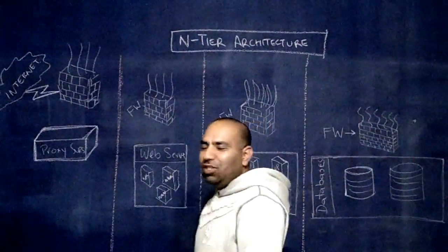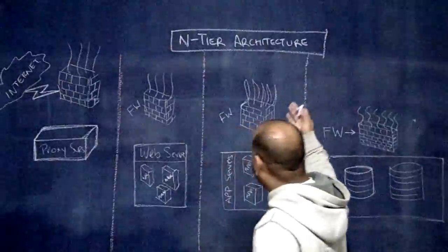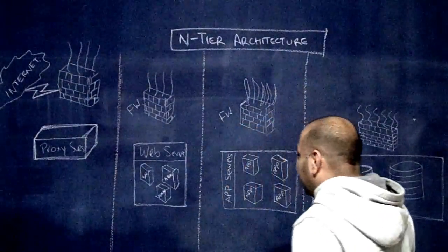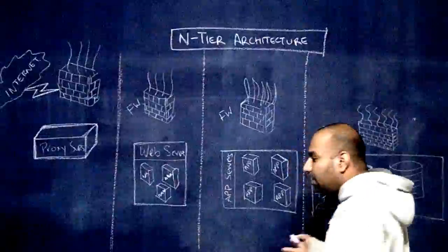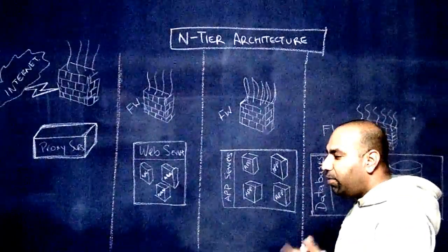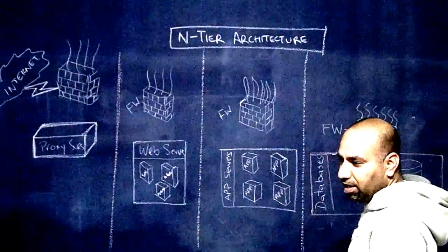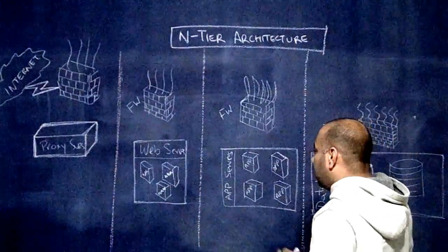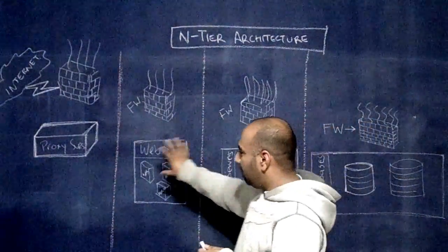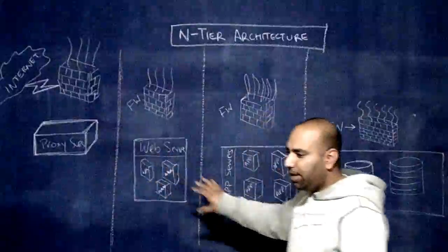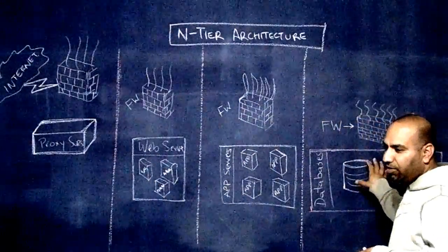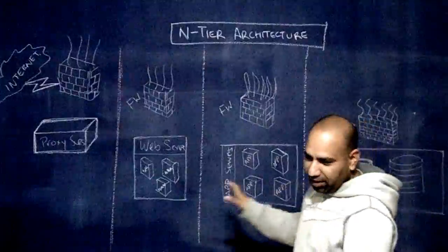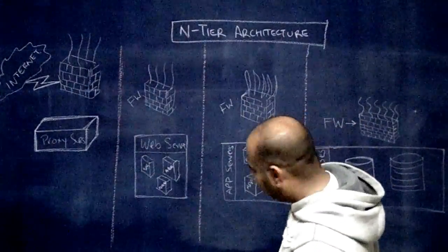Hello everybody! Today we are going to be talking about n-tier architecture. This is commonly used in scenarios where you are setting up a lot of web servers, applications, and databases that are being hosted in an environment where you are serving the public through a web interface, but you are also storing data like credit cards, passwords, usernames, and all that fun stuff.